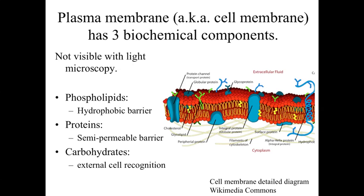They're the same basic plasma membrane components. There are going to be three biochemical components associated with the plasma membrane. Taking this into the perspective of our earlier lectures, the plasma membrane is not visible with light microscopy — we can't use the light microscope to discriminate where that boundary is. However, because of the staining characteristics, we can infer where the plasma membrane is going to be located.